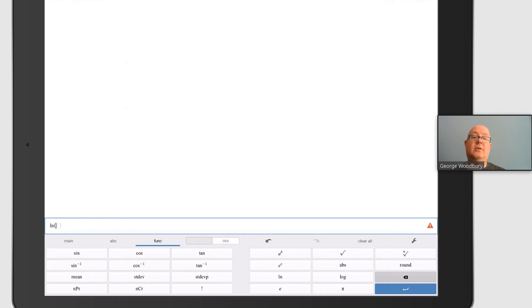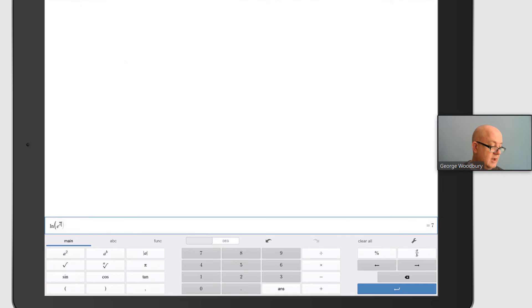We're trying to find the natural log of e to the seventh power, so next I'll push that e to the x button. Go back to the main screen and push seven, and there we see the natural log of e to the seventh power is seven.